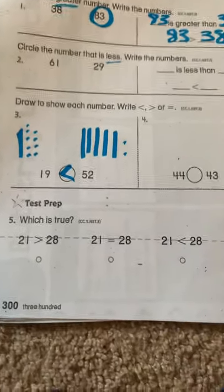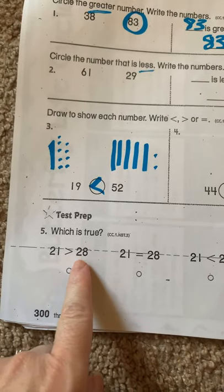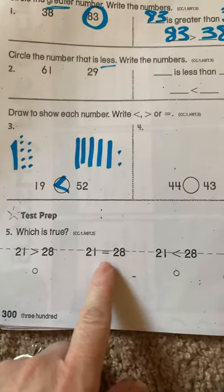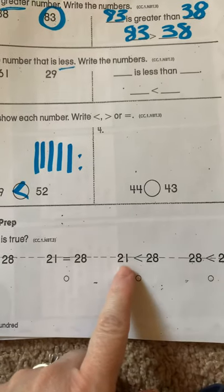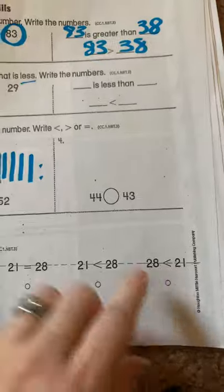Down here, which is true. 21 is greater than 28. 21 is equal to 28. 21 is less than 28. 28 is greater than 21.